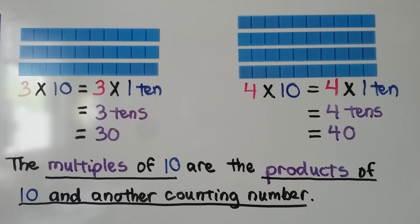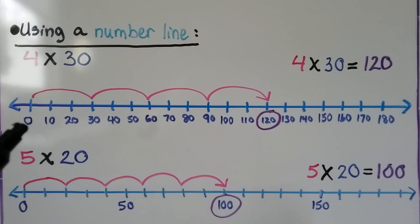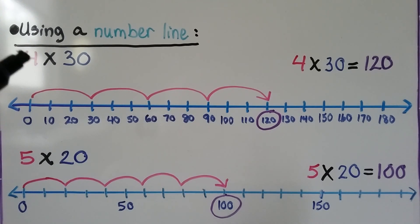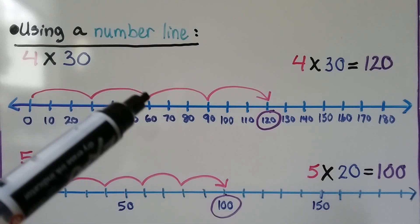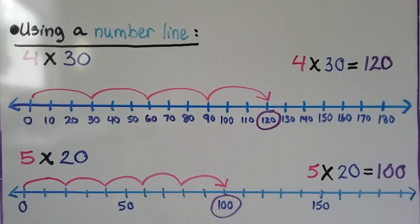The multiples of 10 are the products of 10 and another counting number. Using a number line, we have 4 times 30. We look at the scale first and see it goes by increments of 10. We're going to do 4 jumps of 30. One jump — we're at 30; 2 jumps — at 60; 3 jumps — at 90; and 4 jumps — we're at 120. So 4 times 30 is equal to 120.